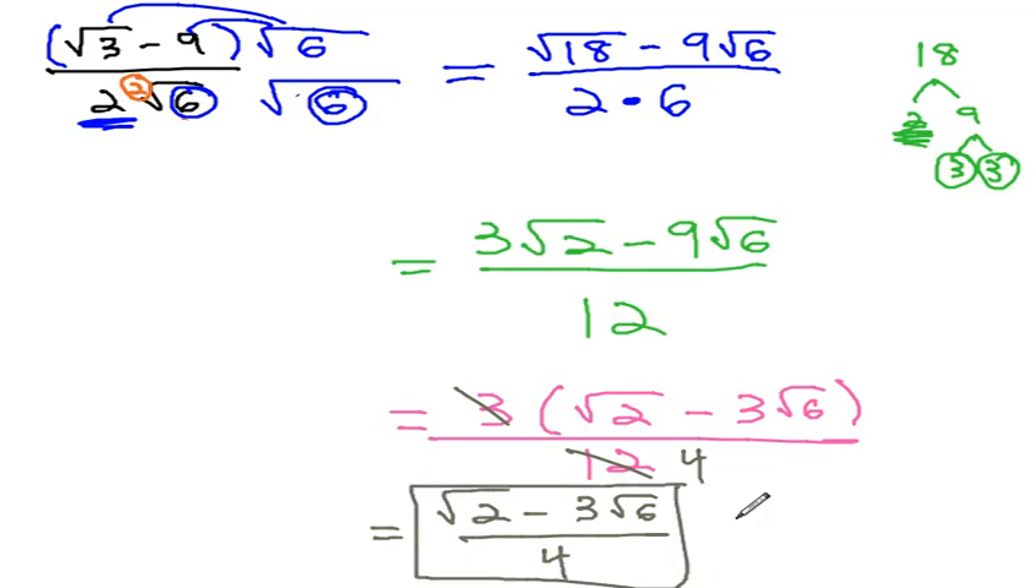Making sure we only divide out factors, not terms, that are added and subtracted. And that simplifies this expression by multiplying by the root 6 in the numerator and denominator to clear the radical. And then, simplify the radicals and simplify the fraction.